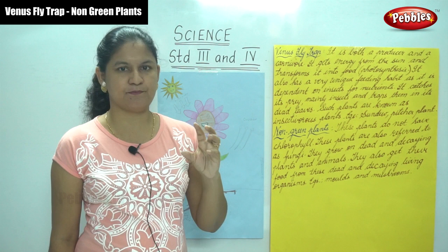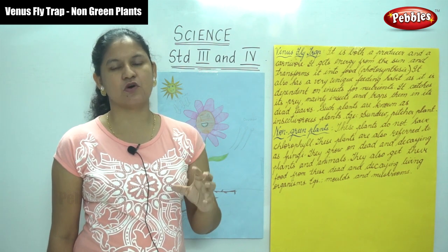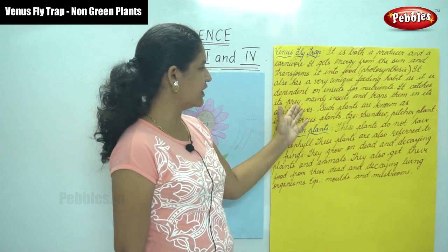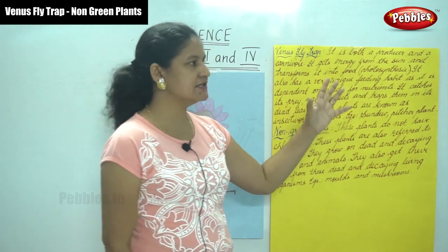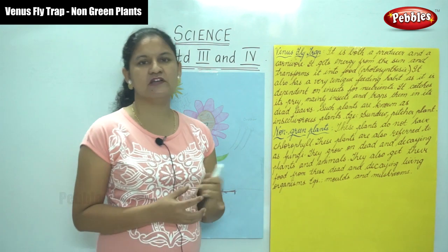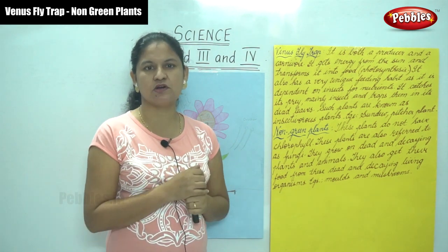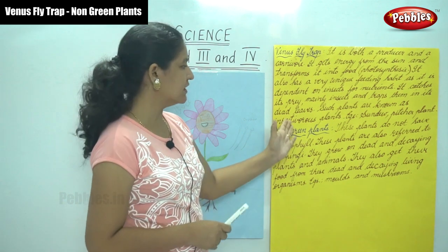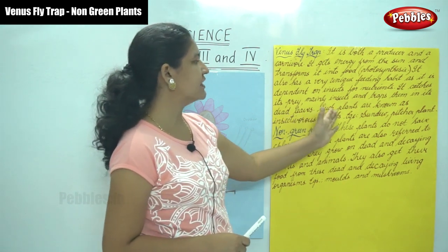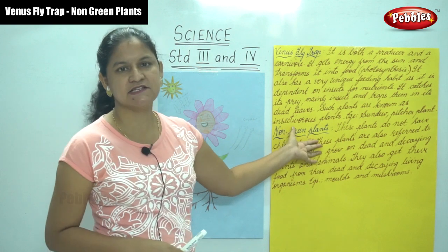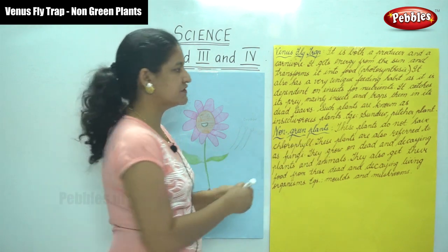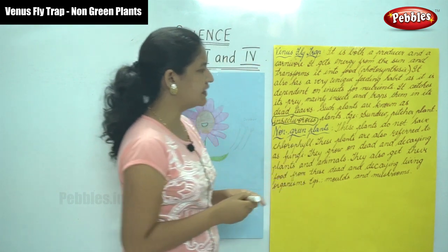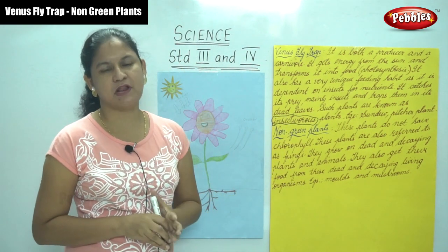This Venus flytrap plant depends on insects for its nutrients. It catches its prey — mainly insects — and traps them in its leaves. Such plants are known as insectivorous plants. Examples include sundew and pitcher plants.